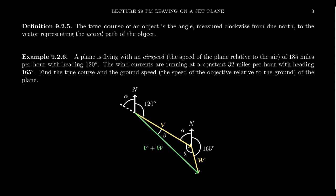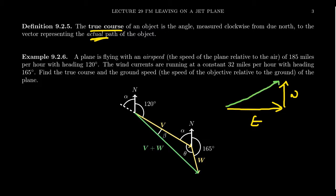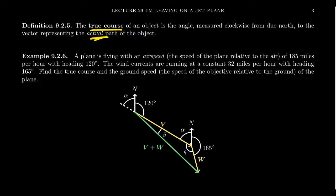There are other forces acting on the moving object that might affect it. Although an object is headed in one direction, its actual path may be in a different direction because of those other forces. This leads to the idea of the true course — the angle measured clockwise from due north to the vector representing the actual path, not the intended path. For example, a boat going due east in a river flowing north ends up traveling in a northeastern direction because of the current. You have to choose your heading so that the true course is actually the direction you want to go, correcting for things like wind and current.